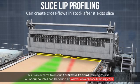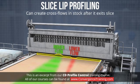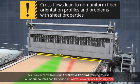This can create cross-flows in the stock after it exits the slice, from higher flow zones to adjacent lower flow zones. The cross-flows lead to non-uniform fiber orientation profiles and problems with related sheet properties such as curl.